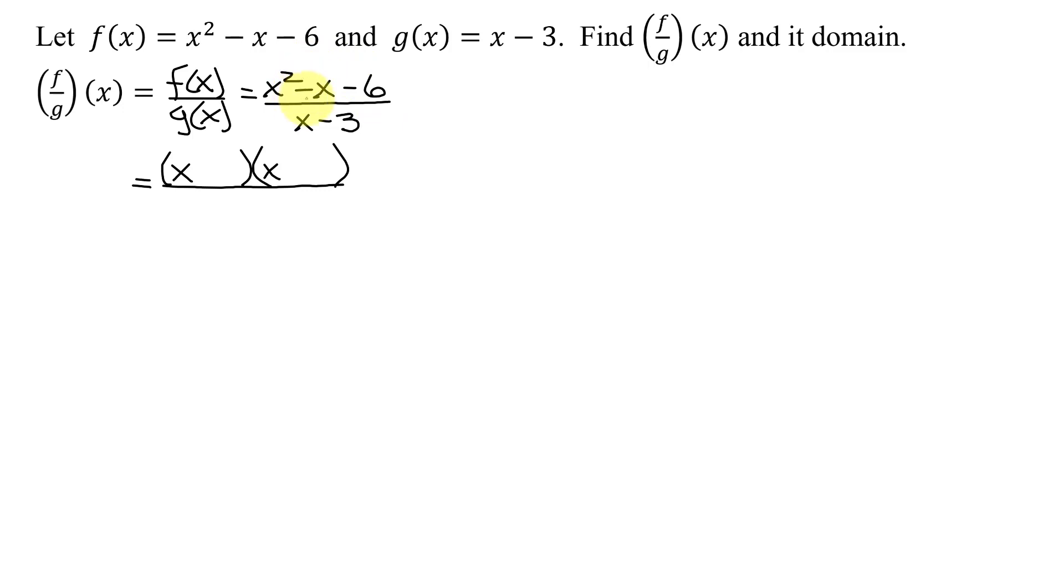Well, 1 and 6 won't work, but 2 and 3 will. Remember it needs to add to negative 1. So I need the bigger number 3 to be negative and the 2 to be positive. Double check by FOILing: x squared plus 2x minus 3x gives me negative 1x, and negative 3 times 2 is negative 6.